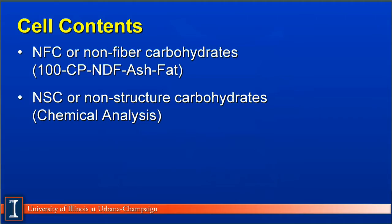Let's look at each of these major breakdowns. The first one is cell contents, referred to in the dairy industry as NFC, or non-fiber carbohydrate. This is a calculated number, and we get that by taking 100% dry matter, subtract from it the percent crude protein, the percent NDF, the percent ash, and the percent fat. Another term is NSC, non-structural carbohydrates, and this is normally analyzed in the lab for sugars and starches primarily.